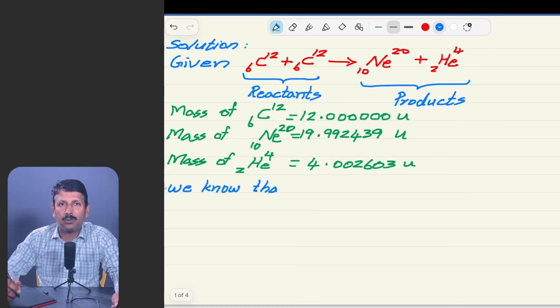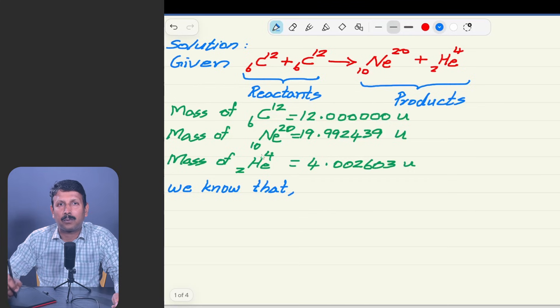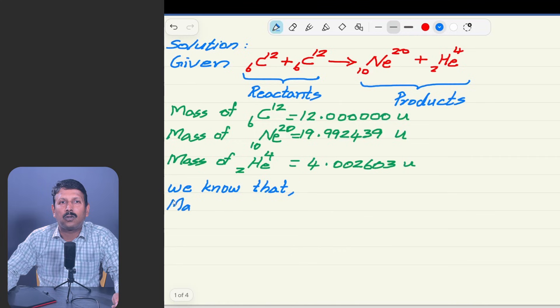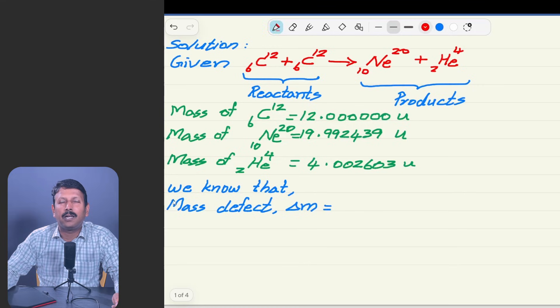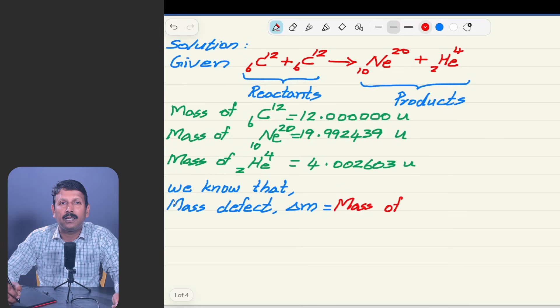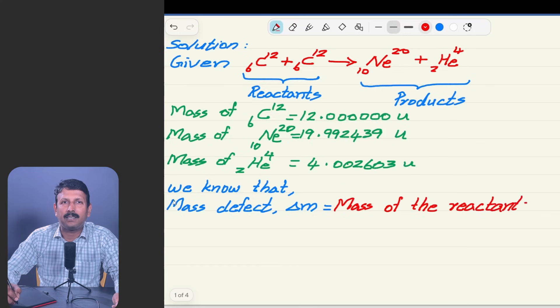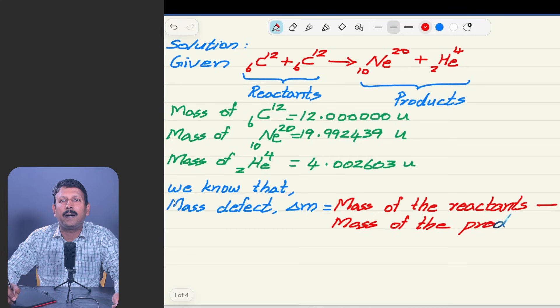So, as per the expression you saw in the previous slide, we want to know what is the mass of the reactants and what is the mass of the products, then we will do the subtraction. Let me write the basic equation required here: mass defect equation that is represented with ΔM = mass of the reactants minus the mass of the products.